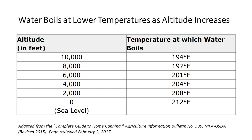This chart shows at what temperature water boils at various elevations: 212°F up to 1,000 feet above sea level; 208°F up to 2,000 feet; 204°F up to 4,000 feet; and all the way at the top, only 194°F at 10,000 feet.